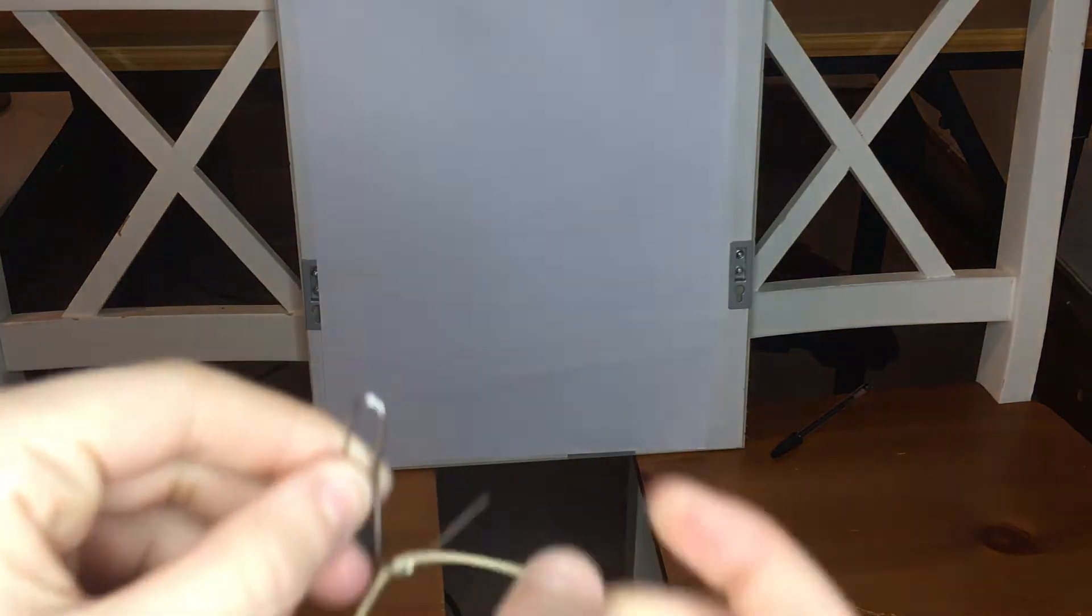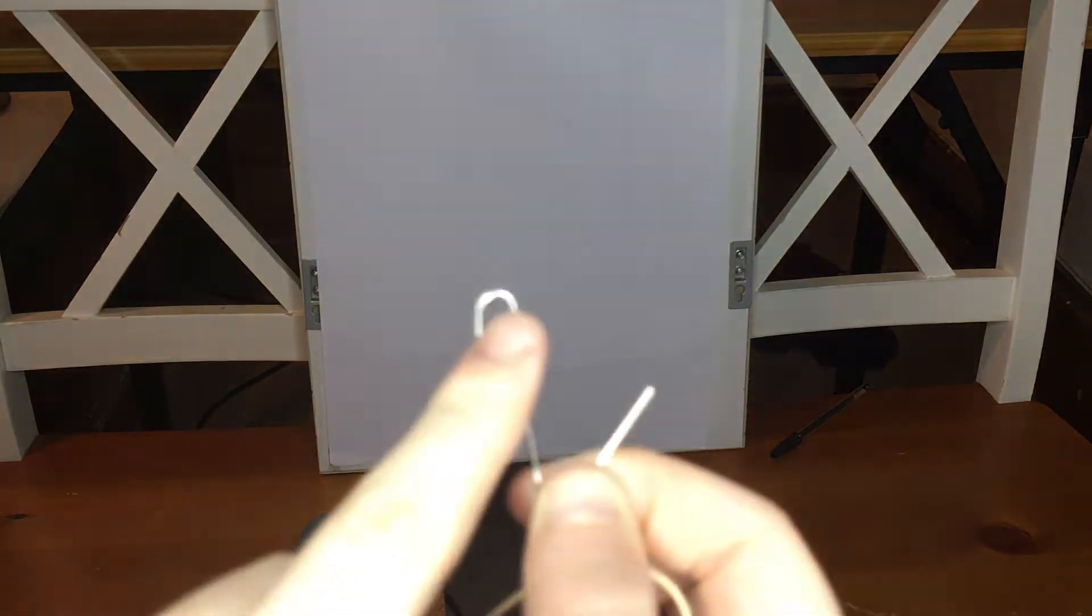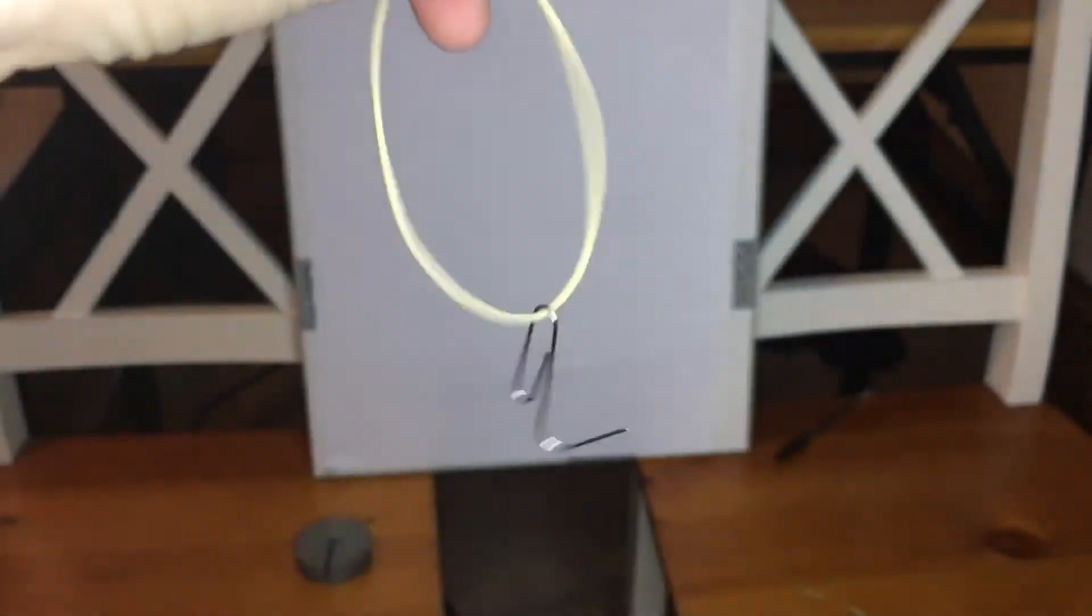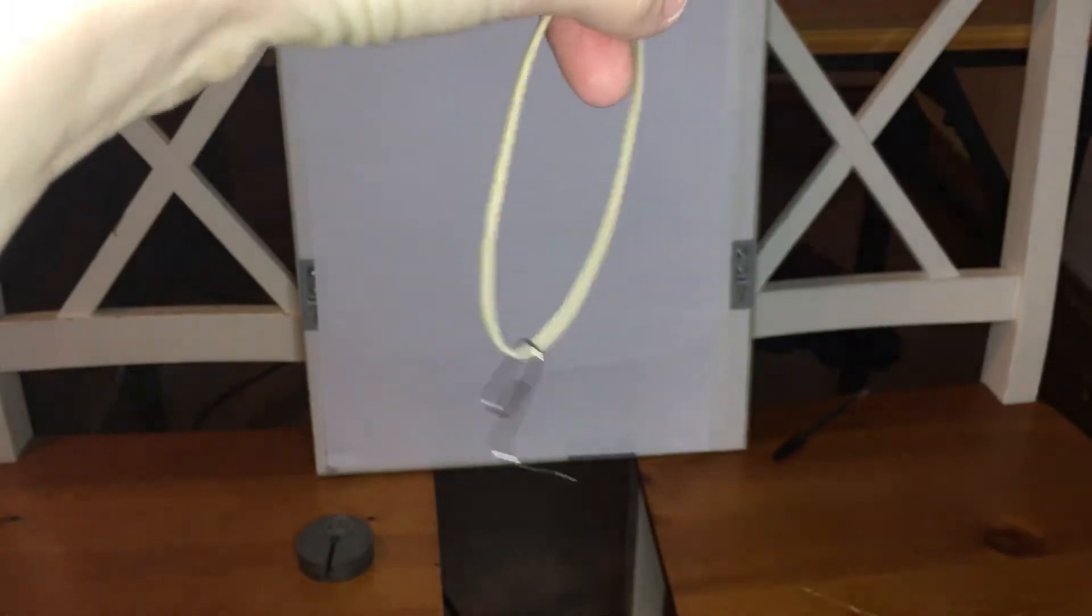It should look something like this. Now you'll get your elastic band and put it through this little hoop, so you just place it through and pull. It should look something like this.